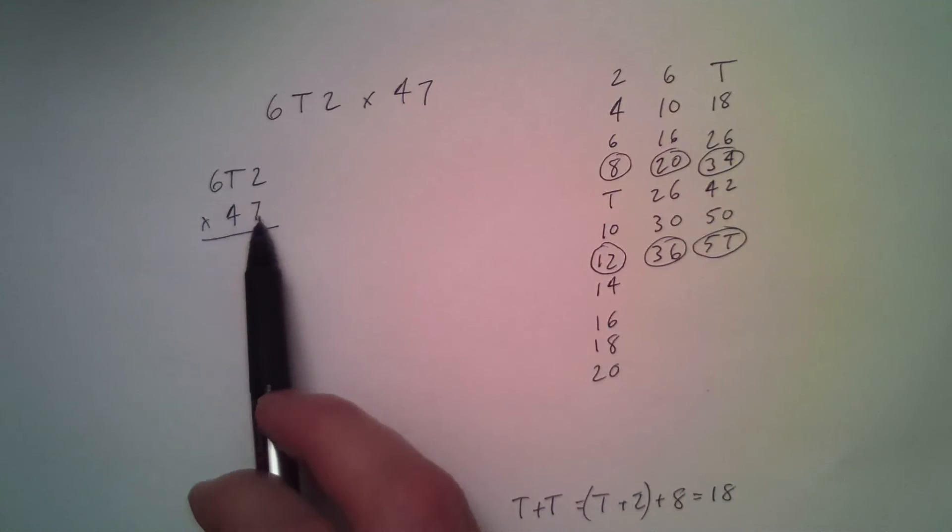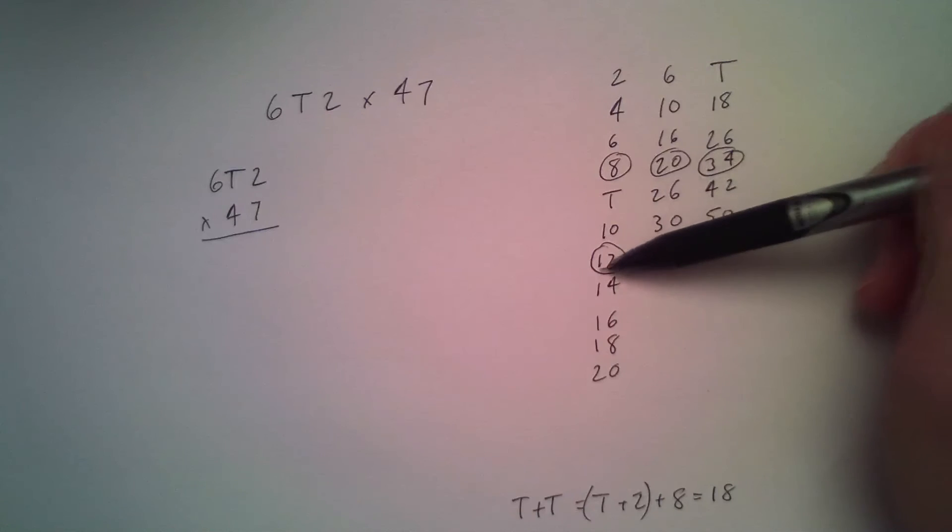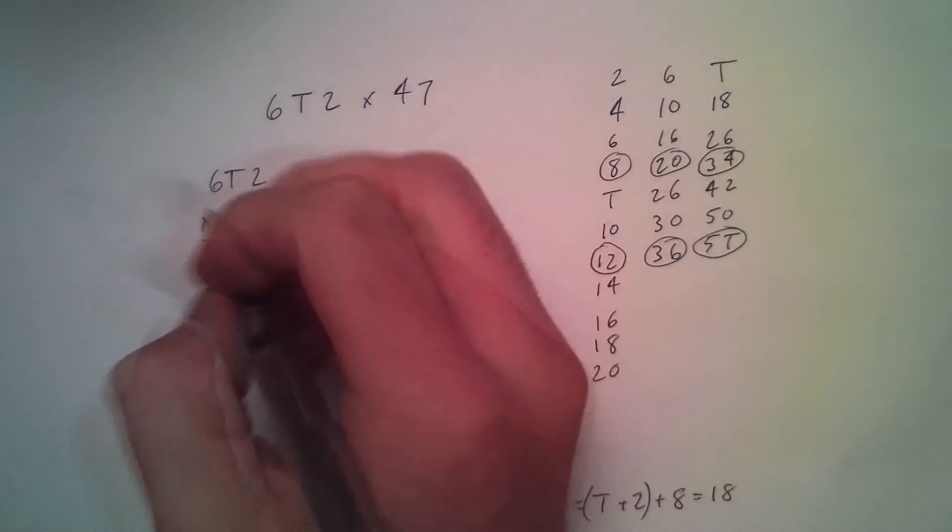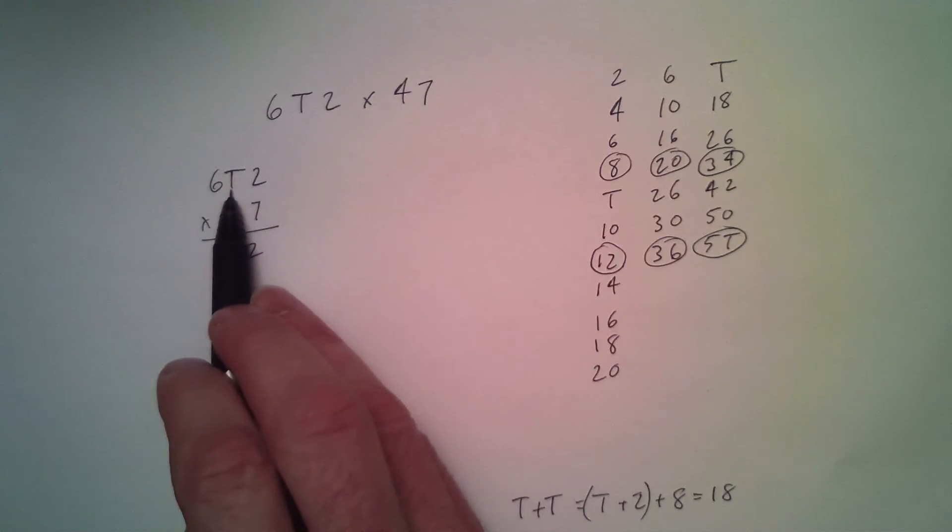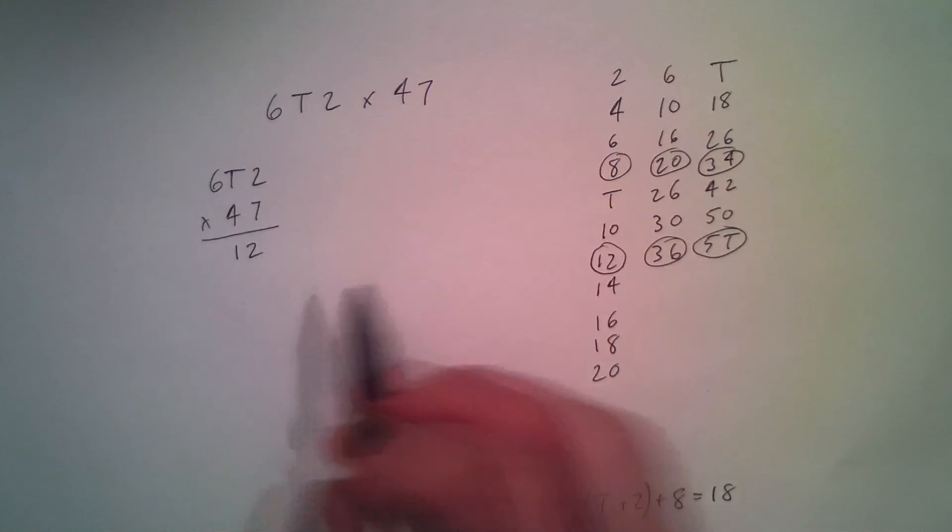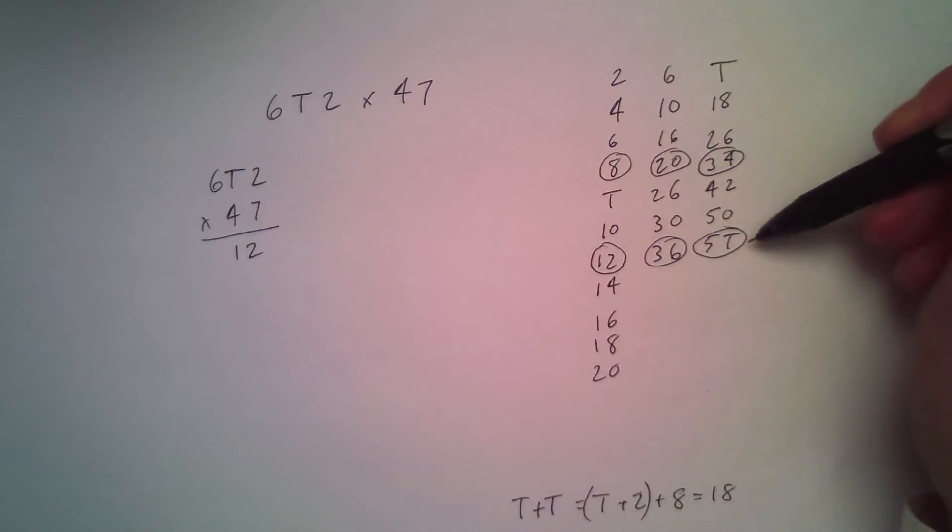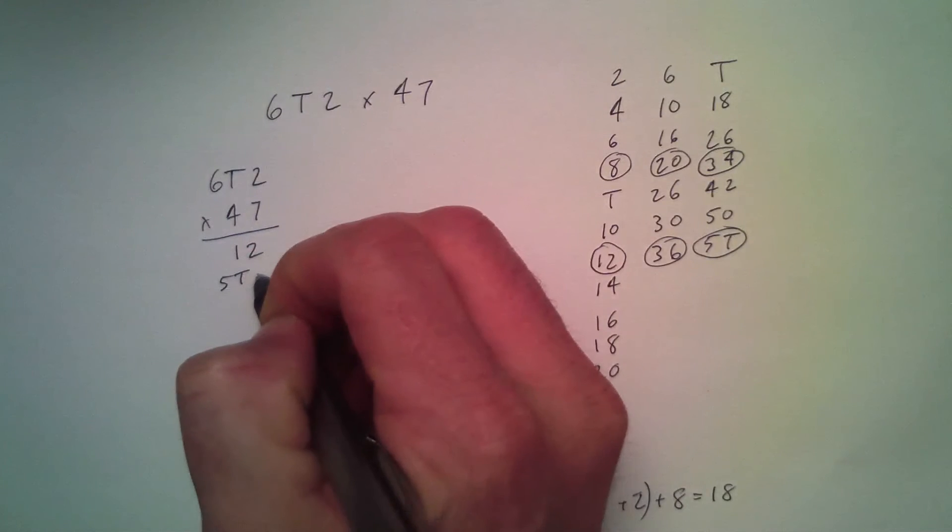So the first thing we're going to do is 7 times 2. 7 times 2. Well, let's see. 7 times 2 we circled here was a dozen 2. Write down a dozen 2. So the next multiplication is 7 times deck a dozen. So that deck is not just a deck but it's deck dozen. So 7 times deck a dozen which is just 7 times deck with a 0 at the end. So 7 times deck is 5 dozen deck.